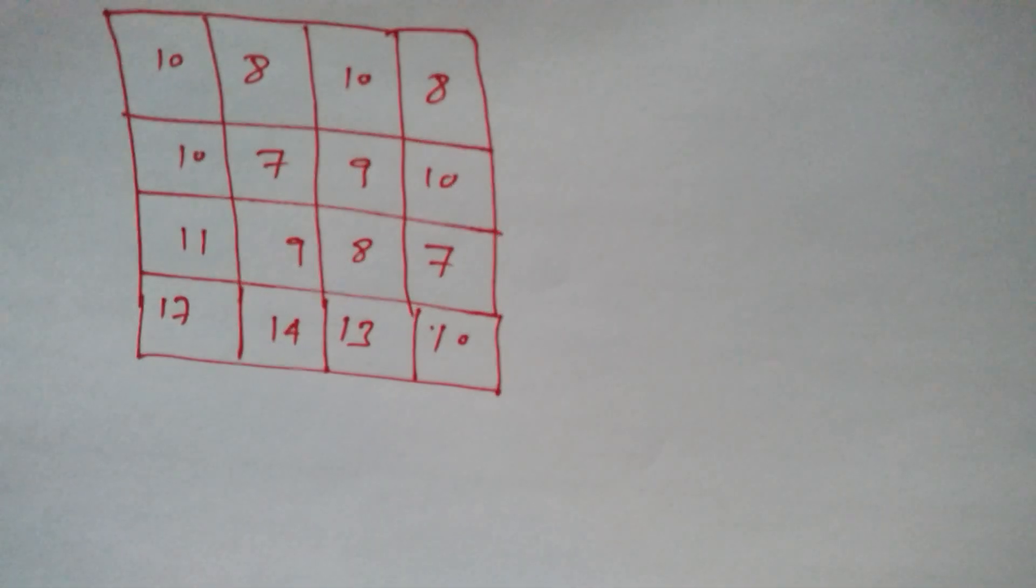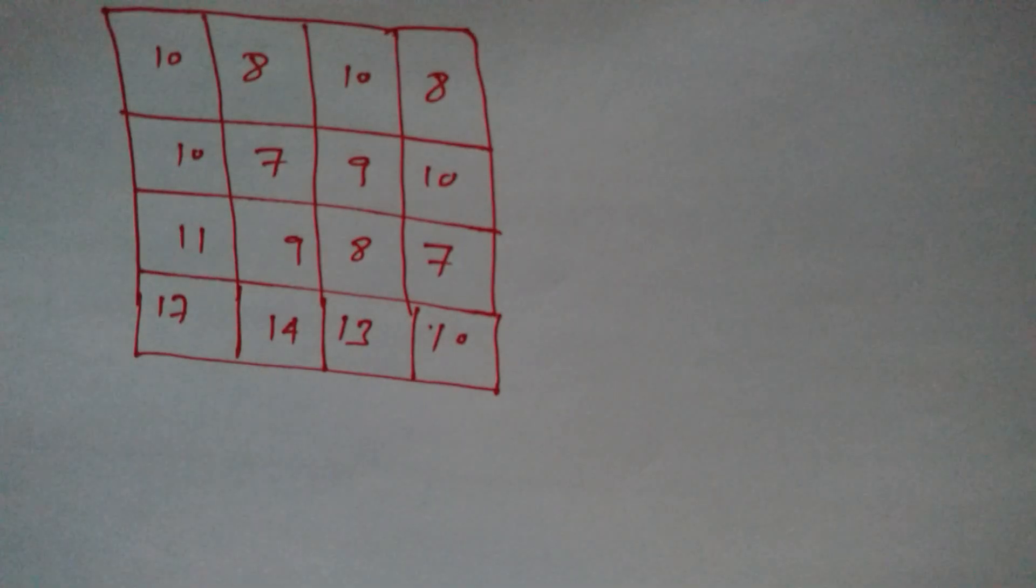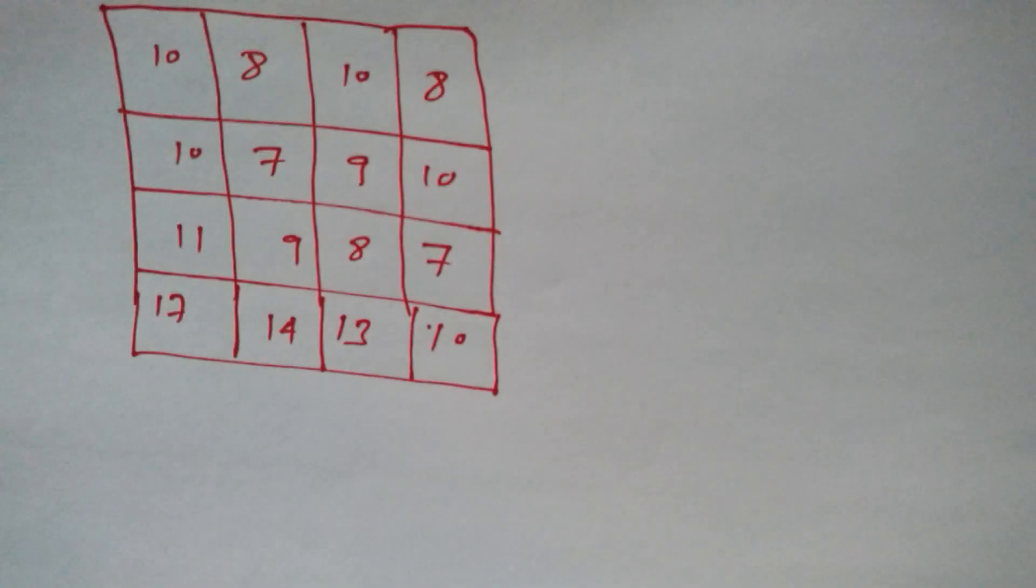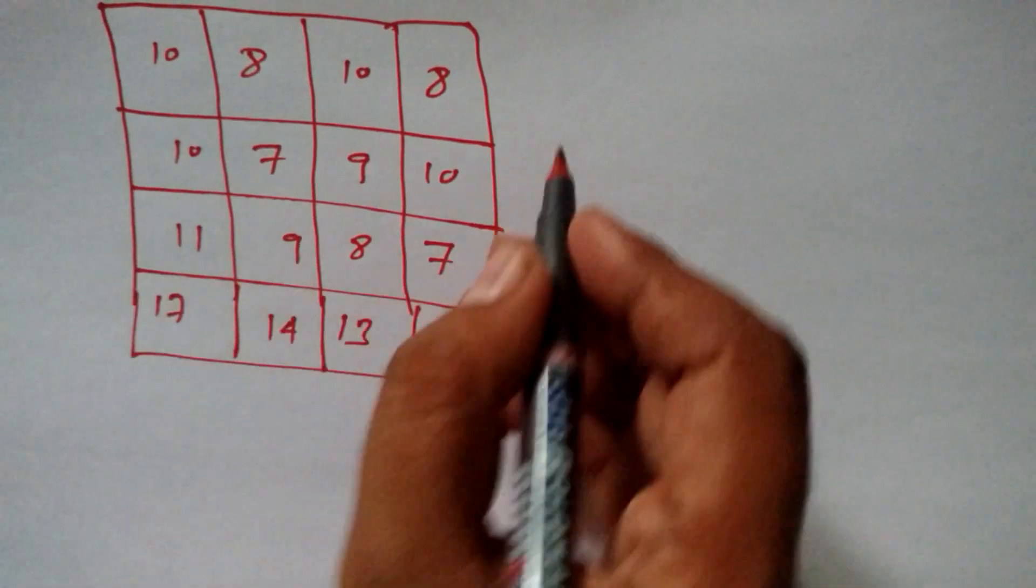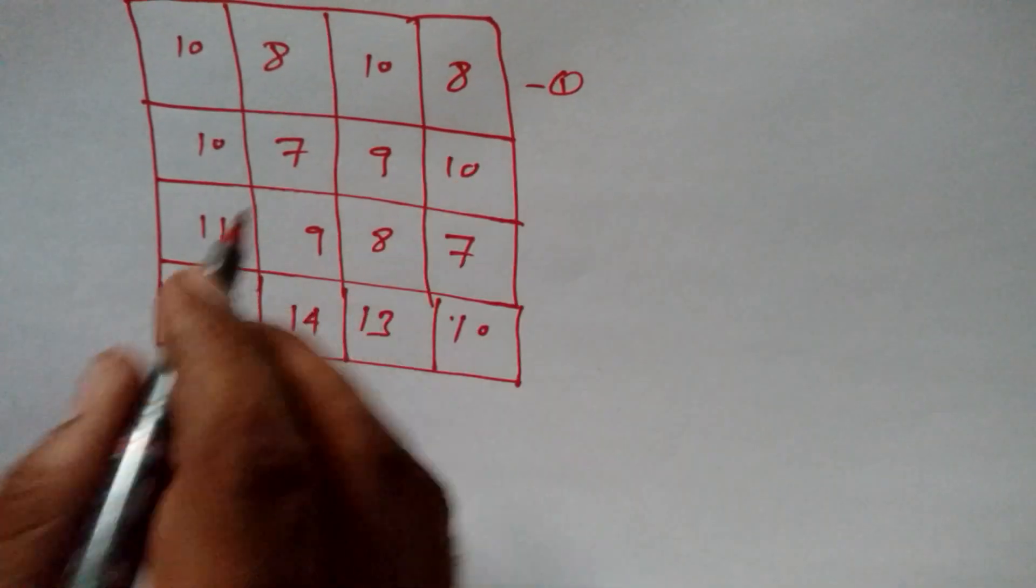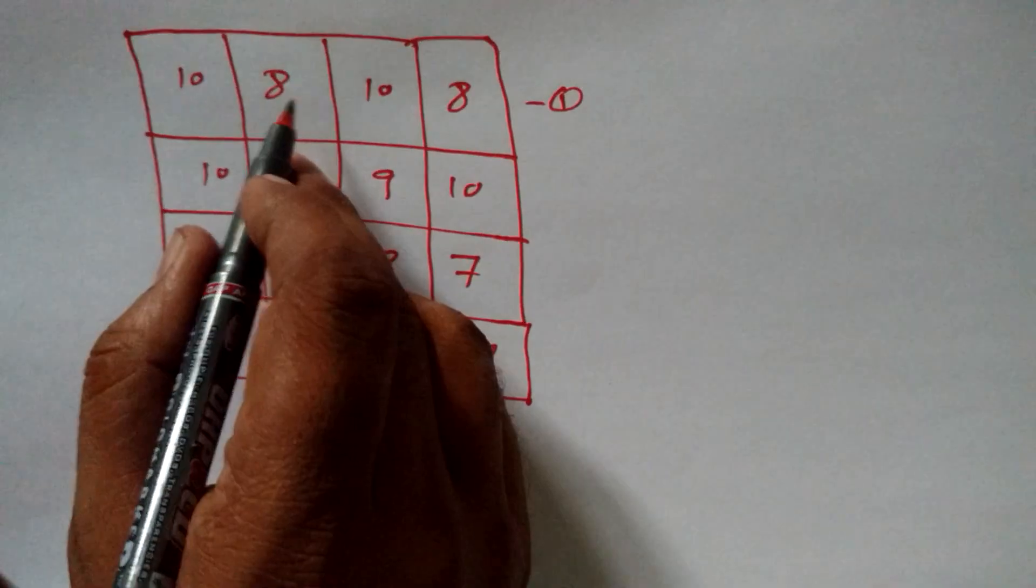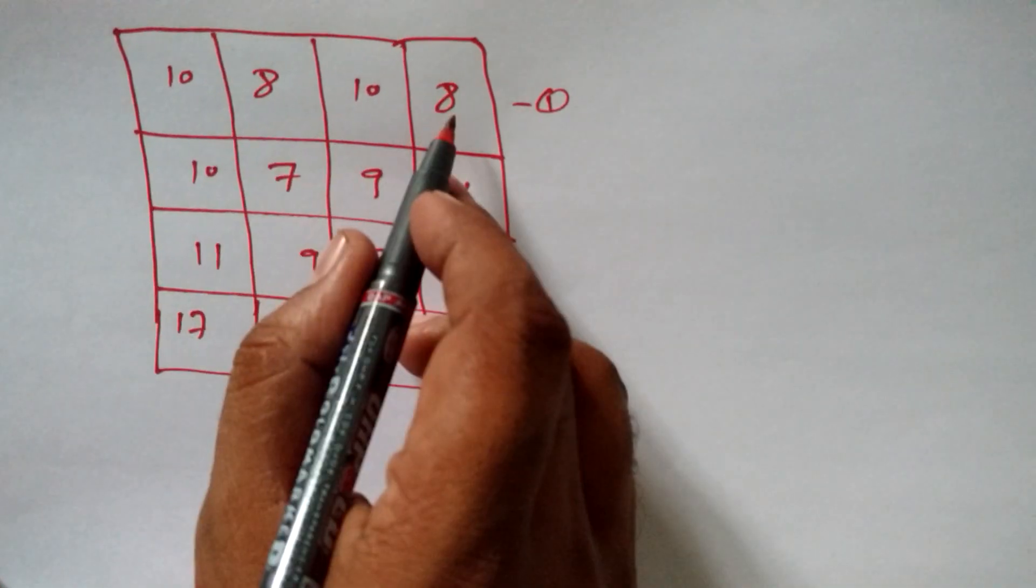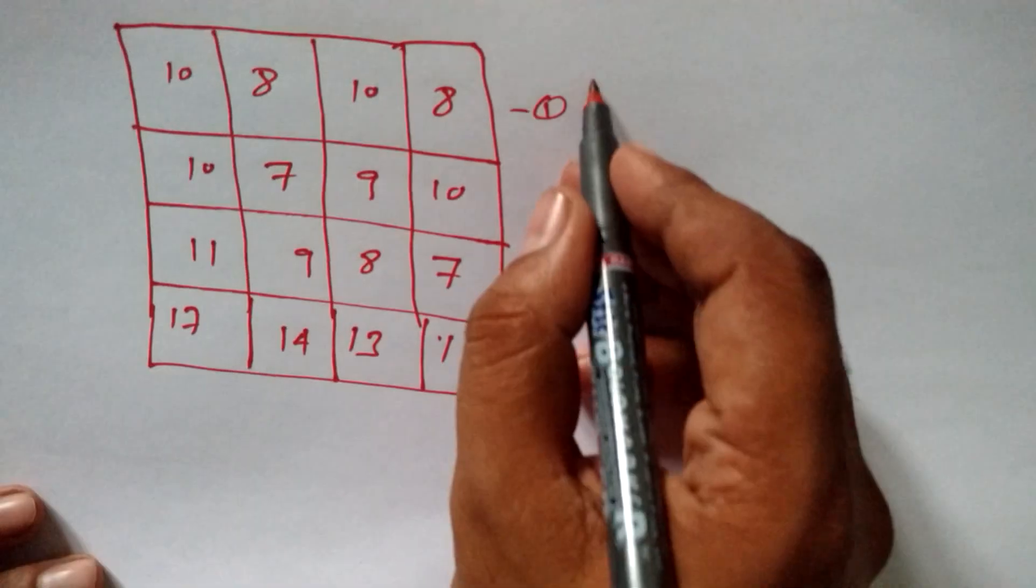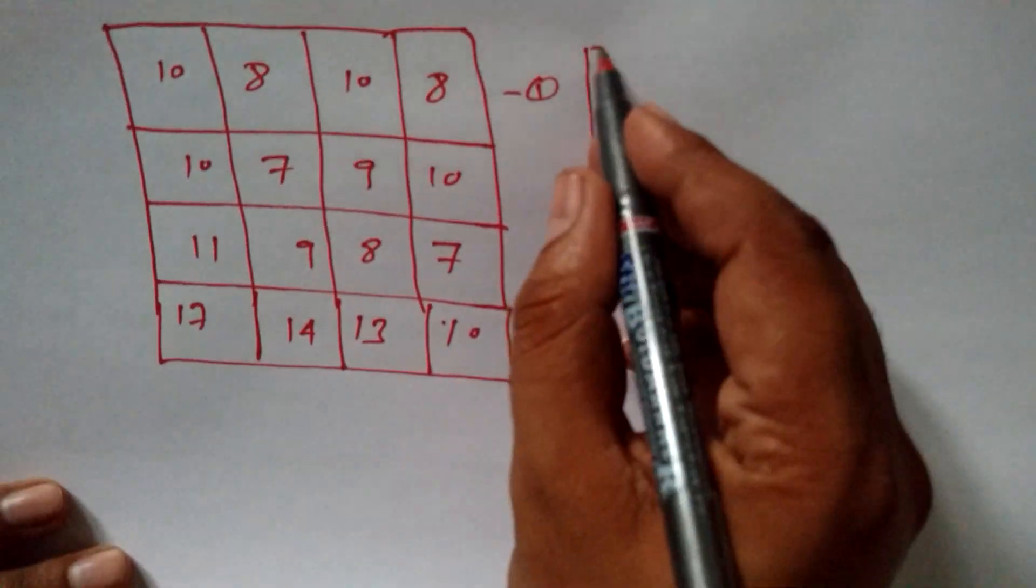So, according to this method, what we should do is find out the minimum, not maximum, the minimum from any row. Suppose that this is a row, right. So we will find out minimum value from this row and subtract that value from each and every element from this row. Let me just demonstrate so you can understand it much better way.